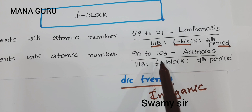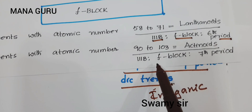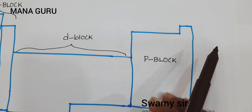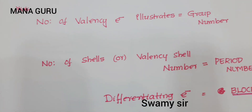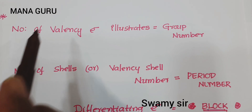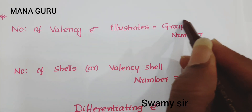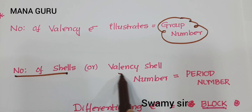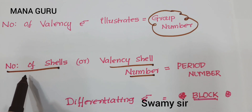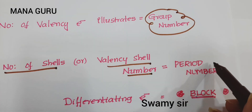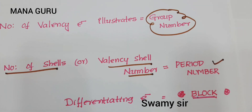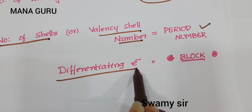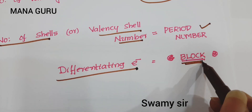Elements with atomic number 90 to 103 are called actinoids. They belong to third B block and seventh period. Now, how can we predict using shortcuts? For any element, if you know the number of valency electrons, you can easily find out its group number. And if you know the number of shells or valency shell number, it reveals the period number. The differentiating electron — the electron that finally enters into an atom — illustrates the block.